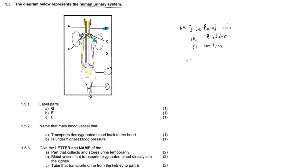We are done labeling the parts. Now going to question 1.5.2, which asks us to name the blood vessel that transports deoxygenated blood back to the heart. The blood is deoxygenated — it has already lost its oxygen in the kidney and is leaving the kidney going back to the heart. When it moves out of the renal vein, it moves back to the heart through the inferior vena cava, which carries deoxygenated blood into the heart.